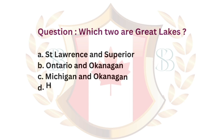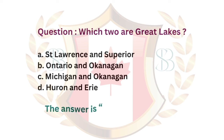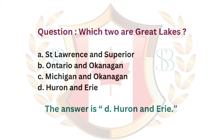Question. Which two are Great Lakes? a. St. Lawrence and Superior. b. Ontario and Okanagan. c. Michigan and Okanagan. d. Huron and Erie. The answer is d. Huron and Erie.